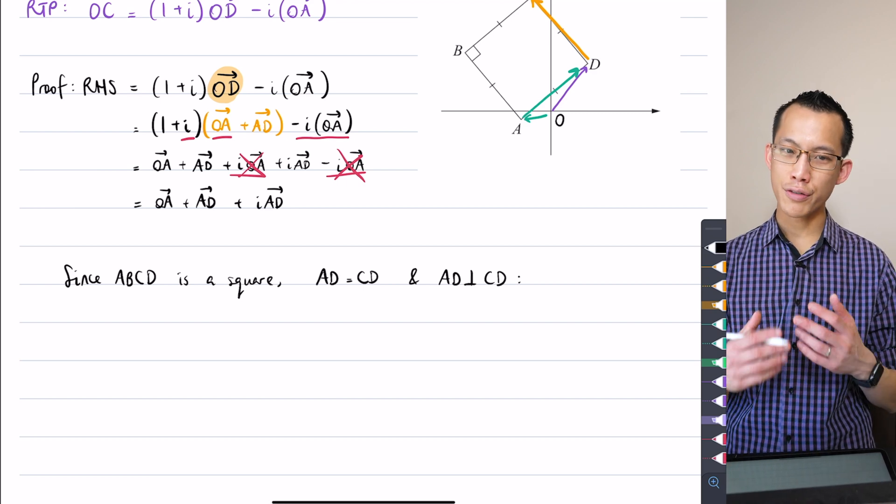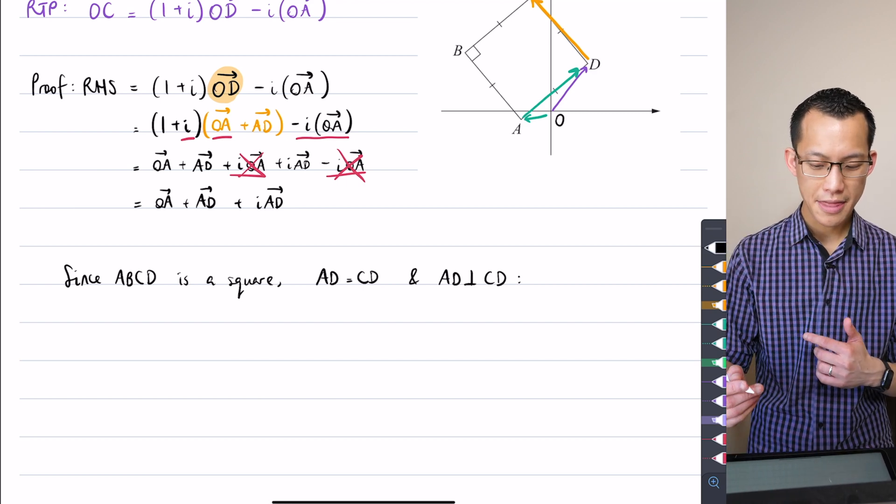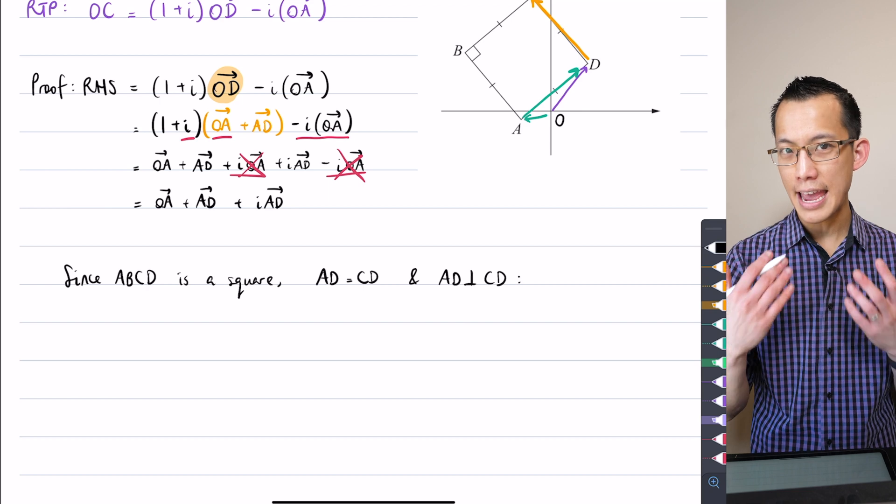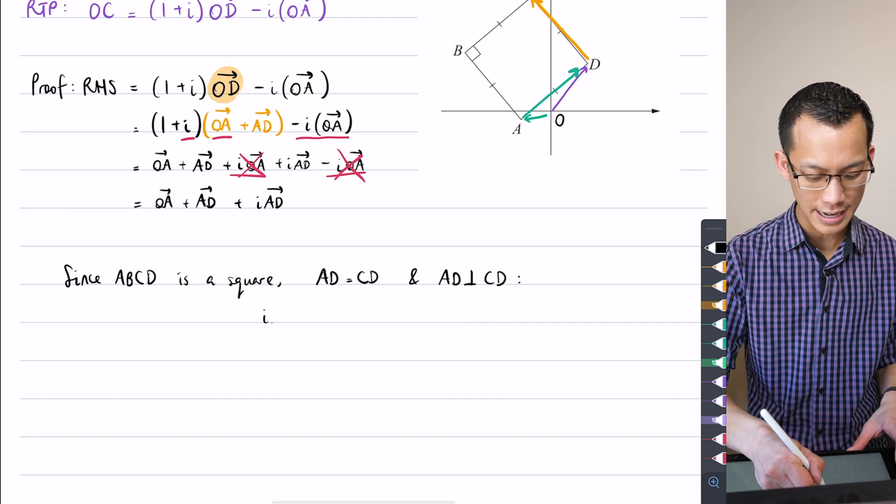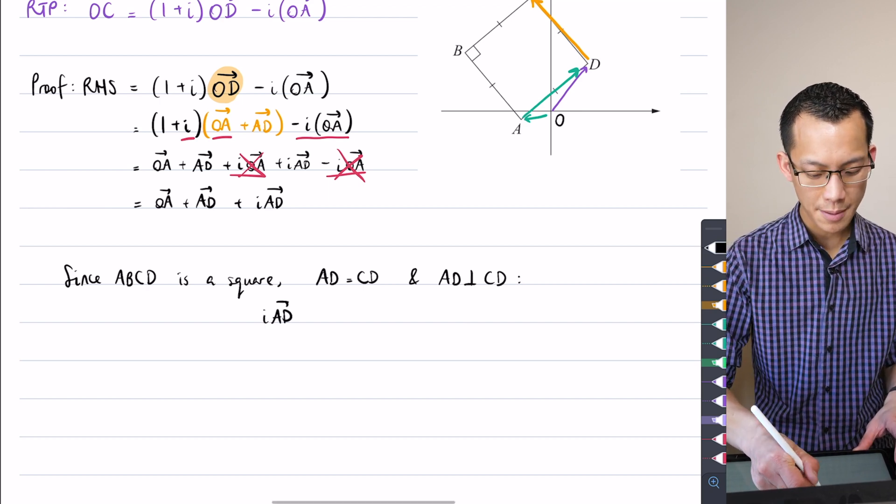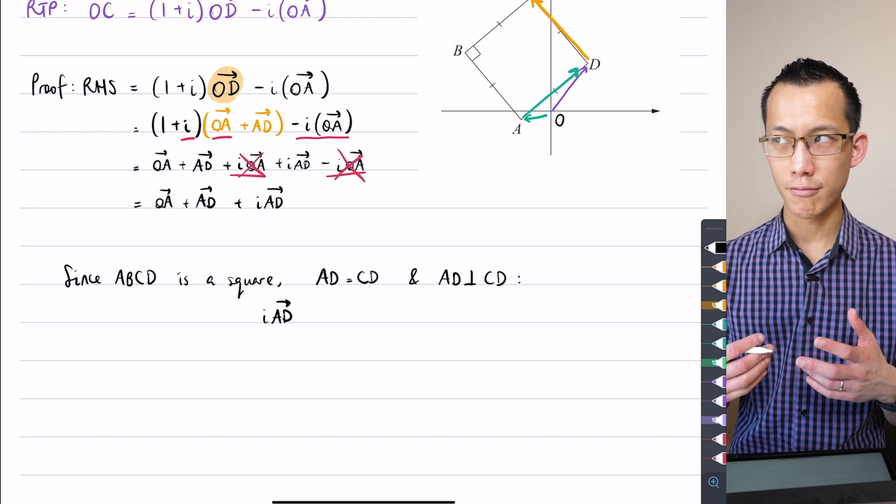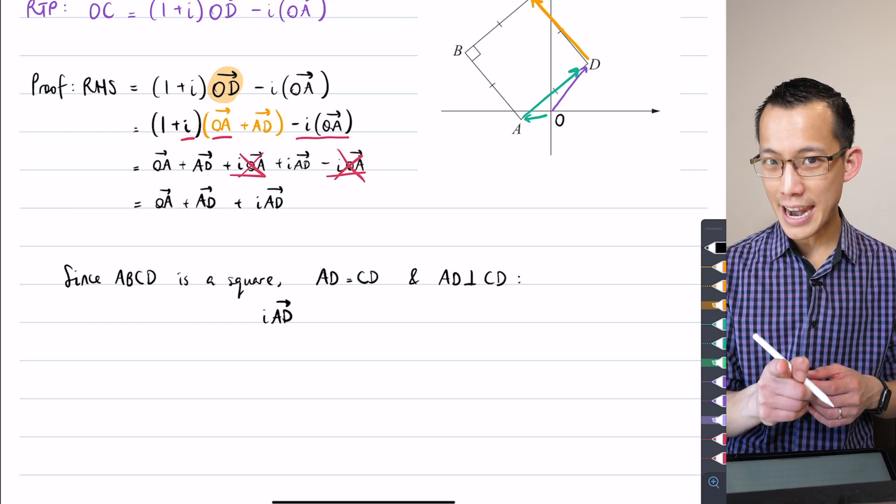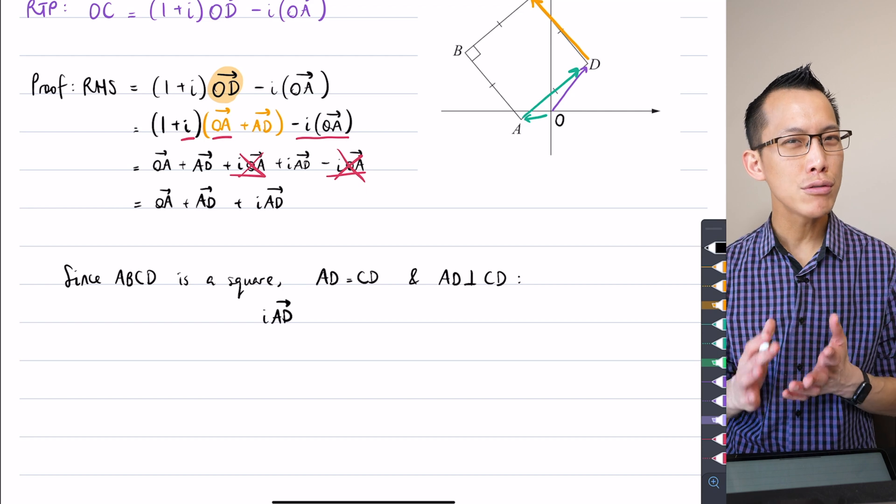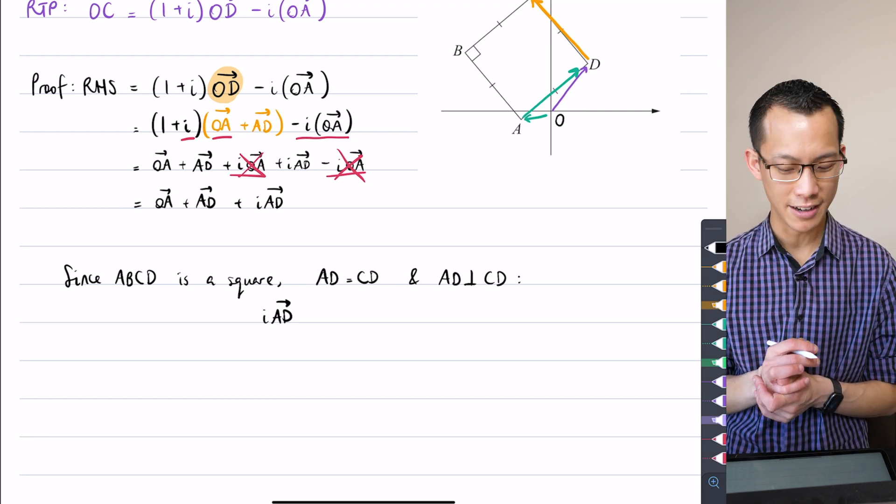So since that is true, I can therefore say that if I take vector AD and multiply it by i, I'm going to be rotating it. Think about this for a second. We're rotating it by 90 degrees, but make sure you know which direction you're going to be rotating it in.